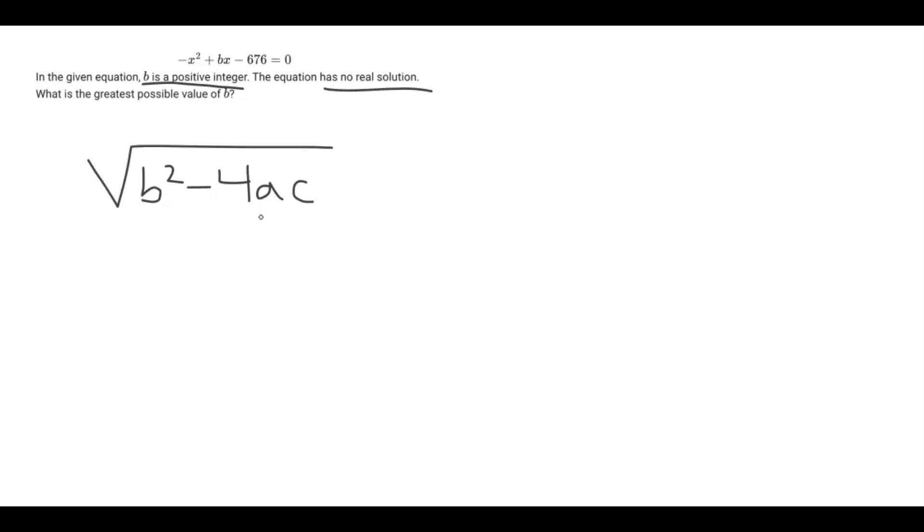To calculate this, we just need to know what negative 4 times A times C is equivalent to, and then find a B value that is less than that but the greatest possible value.